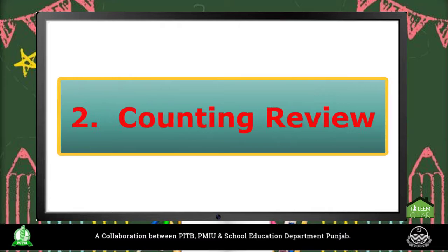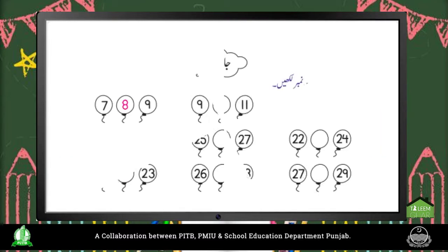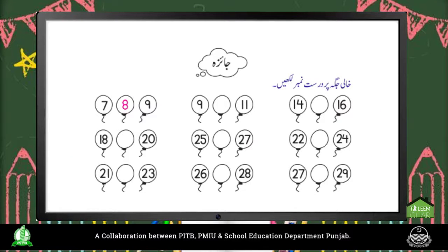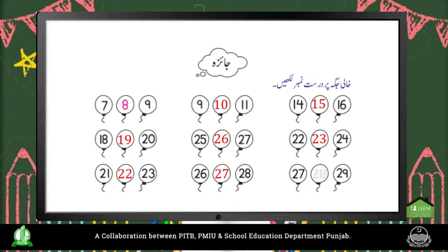Now we will read about Topic No. 2: Counting Review. Let's do an exercise — write the correct number in the blank space. 7, 8, 9, 10, 11; 14, 15, 16; 18, 19, 20; 25, 26, 27; 22, 23, 24; 21, 22, 23; 26, 27, 28; 27, 28, 29.